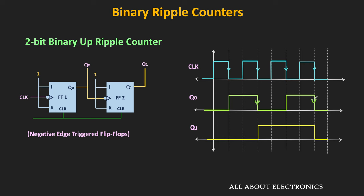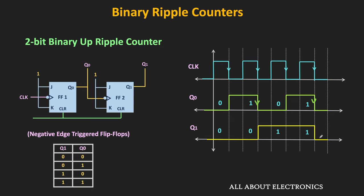Outputs Q1 and Q0 represent the state or count of the counter, and the count changes at every clock pulse. Initially, both Q1 and Q0 are 0. At the first falling edge, Q0 becomes 1 while Q1 remains 0, giving count 01. After the second falling edge, the state becomes 10, then 11. After that, at the next falling edge the output becomes 00, and the same sequence repeats. This is how we design this 2-bit up counter.